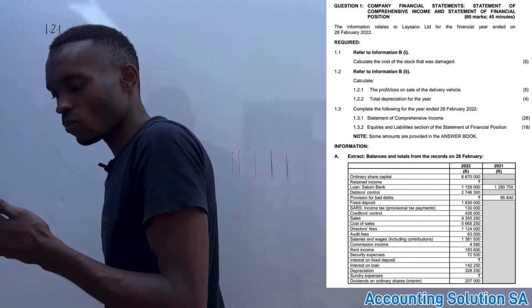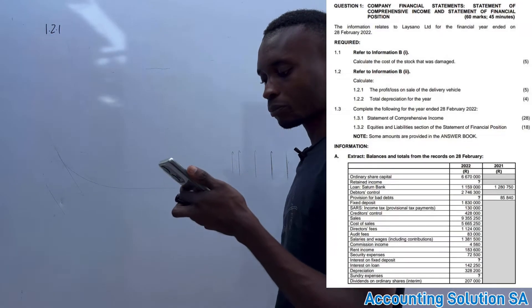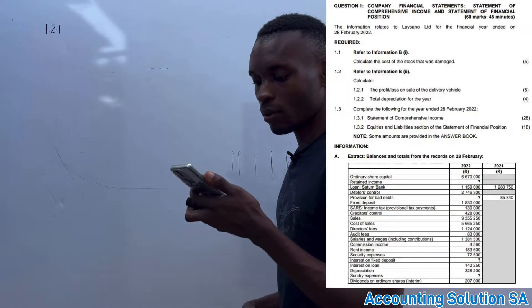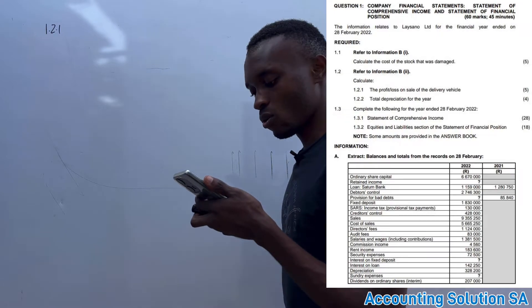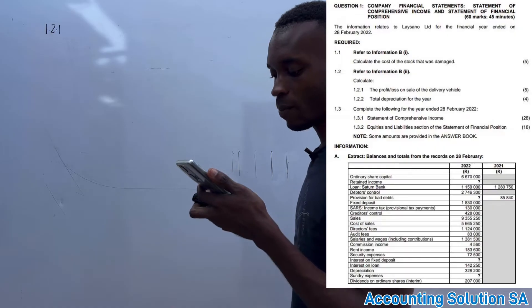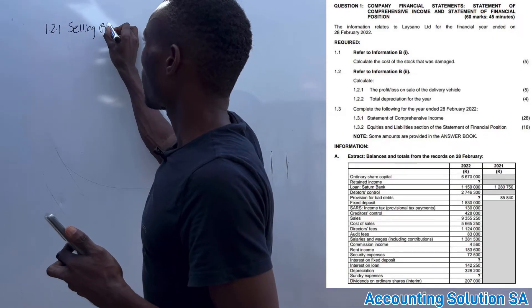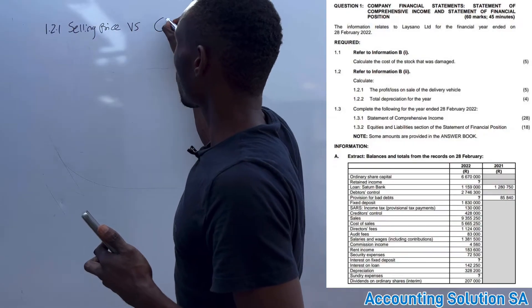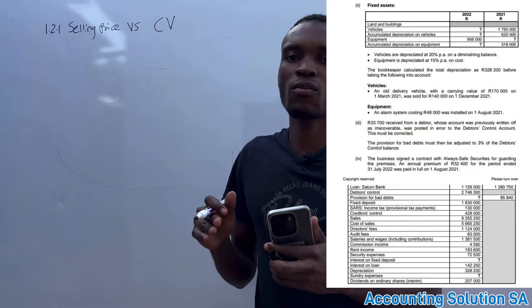Question 1.2.1 asks us to calculate whether there was a profit or loss when we sell a delivery vehicle. Let's look at the relevant transaction. Under fixed assets, vehicles: an old delivery vehicle with a carrying value of R170,000 on 1 March 2021 was sold for R140,000 on 1 December 2021. Remember, when we calculate whether we make a profit or loss, we need to compare the selling price with the carrying value at the date the item was sold.